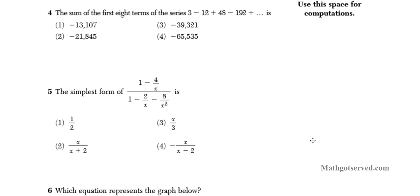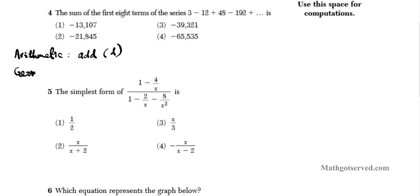Let's take a look at question number 4. It says: what is the sum of the first 8 terms of the series 3 minus 12 plus 48 minus 192...? Looking at the reference sheet, there are two formulas: geometric and arithmetic series. For arithmetic you always add the same constant D. For geometric you always multiply by the same constant — the common ratio R. So in this series, are we constantly adding the same number or multiplying? If we assumed we're adding, 3 minus 15 gives negative 12, so we'd subtract 15. But subtracting 15 from negative 12 gives negative 27, not 48 — so it's not arithmetic.